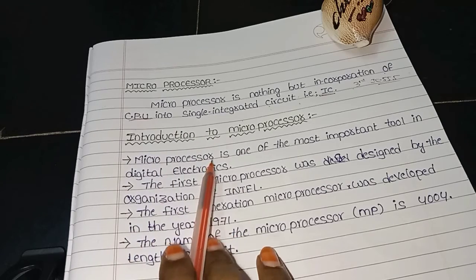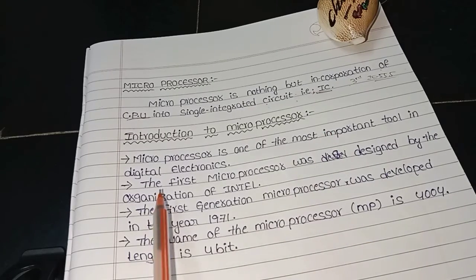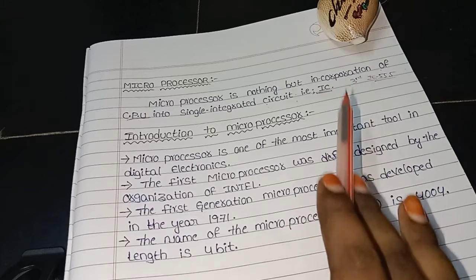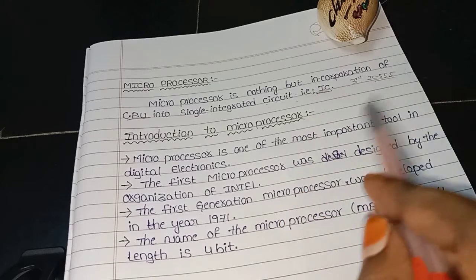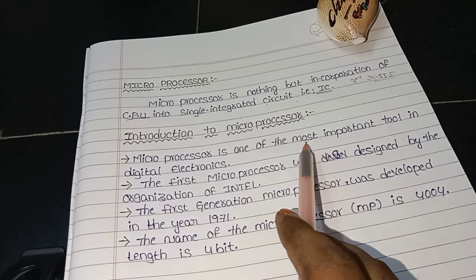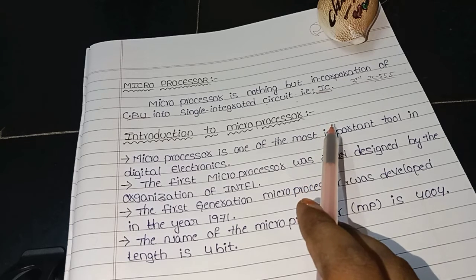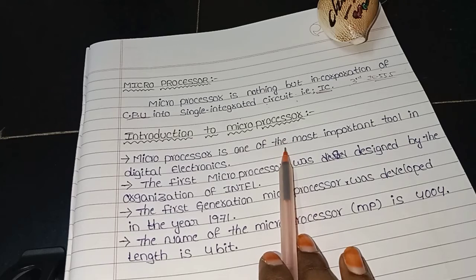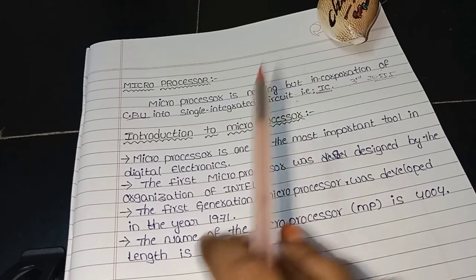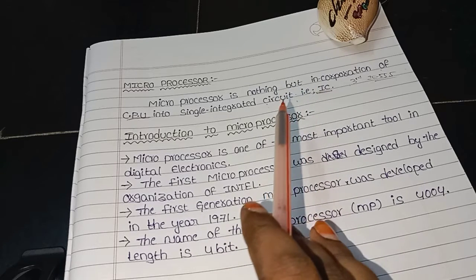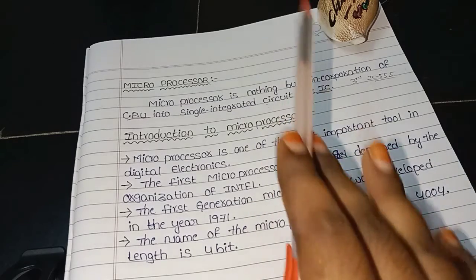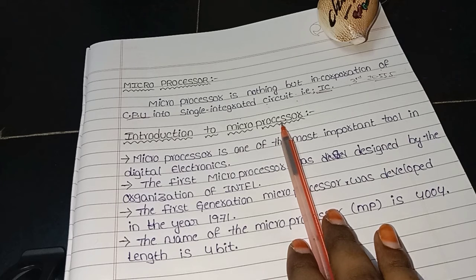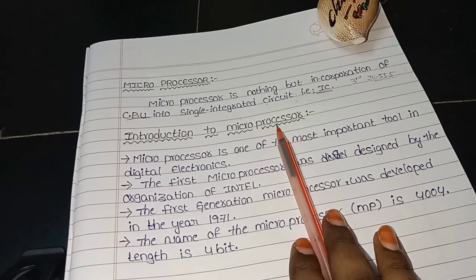Microprocessor is the most important tool in digital electronics. Next, who first introduced the microprocessor? The company name is Intel. Intel is a very big company — many of you may have heard that name. They first introduced the microprocessor in 1971. The name given to the first microprocessor is 4004, with 4-bit storage and 16 pins.